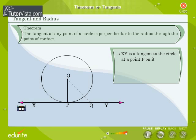Join OQ. Proof: Q lies outside the circle because if Q lies inside the circle, XY will become a secant of the circle. So, OQ is longer than OP.